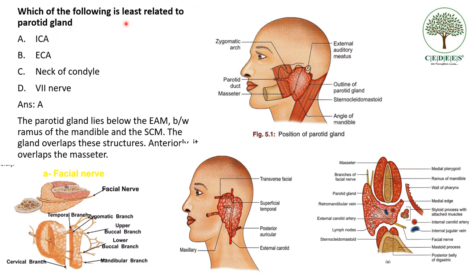Next question: which of the following is least related to the parotid gland? The internal carotid artery, the external carotid artery, the neck of the condyle, or the seventh cranial nerve? Looking at this picture, the parotid gland is lying between the external acoustic meatus and the ramus of the mandible, and the gland is overlapping all these structures.